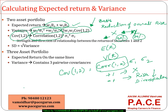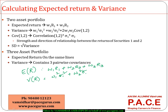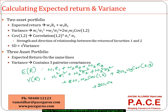The same concept applies to a three-asset portfolio. The expected return in case of a three-asset portfolio is: w1·R1 + w2·R2 + w3·R3. When it comes to the variance, it includes individual variance terms — w1²σ1² + w2²σ2² + w3²σ3² — plus pairwise covariance terms: 2·w1·w2·Cov(1,2) + 2·w2·w3·Cov(2,3) + 2·w1·w3·Cov(1,3). This is the variance of the portfolio in case of three assets.